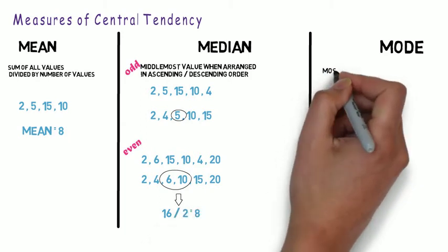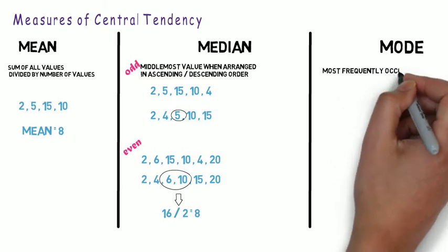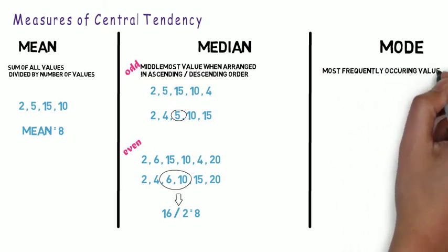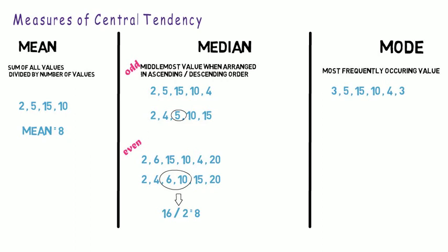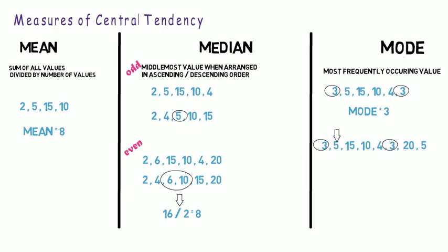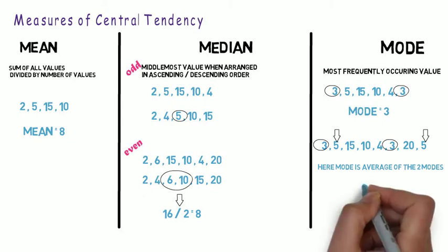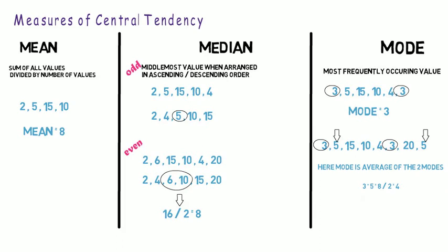Next, we come to Mode. Mode is the most frequently occurring value in a given set of values. So if the given values are 3, 5, 15, 10, 4, 3, then the most frequently occurring value is 3, hence the mode is 3. But what if there are 2 modes? If both 3 and 5 are most frequent, then the mode is the average of the 2 modes: 3 plus 5 equals 8, divided by 2 equals 4. So mode is 4 here.